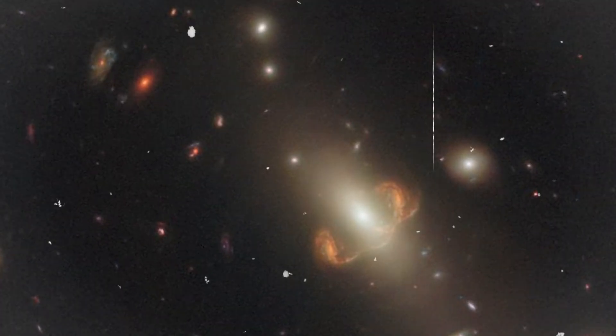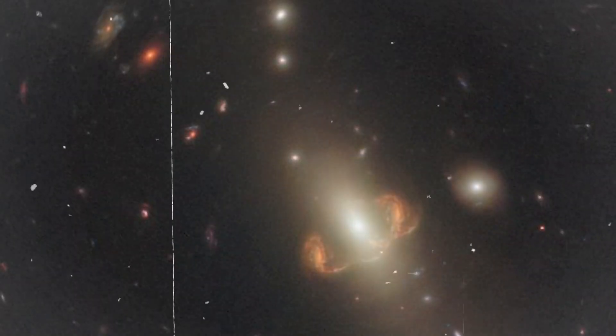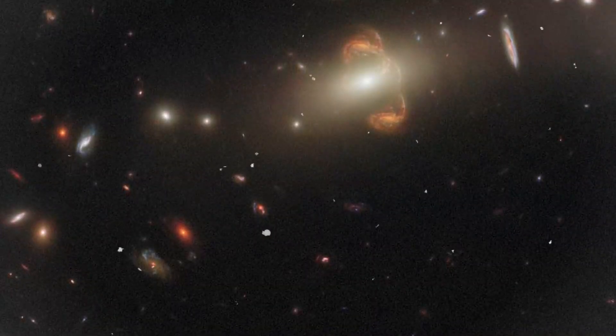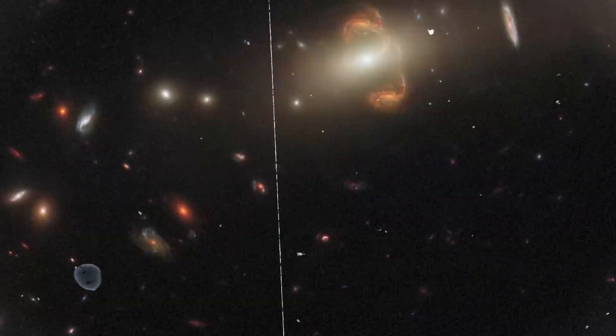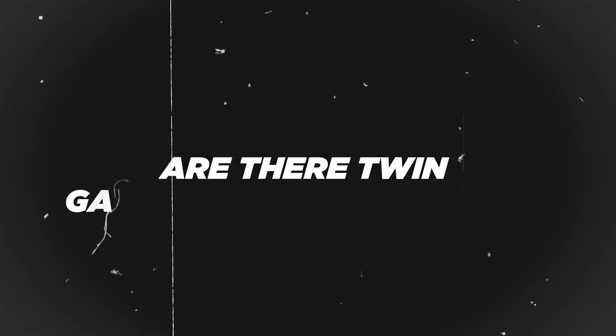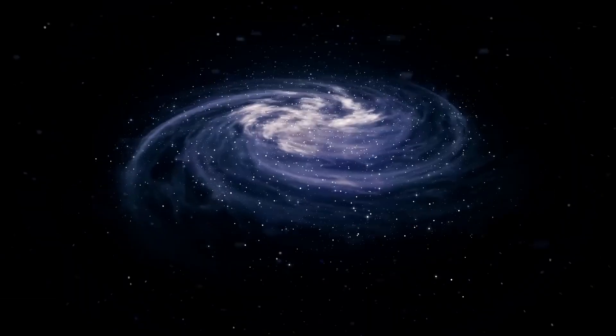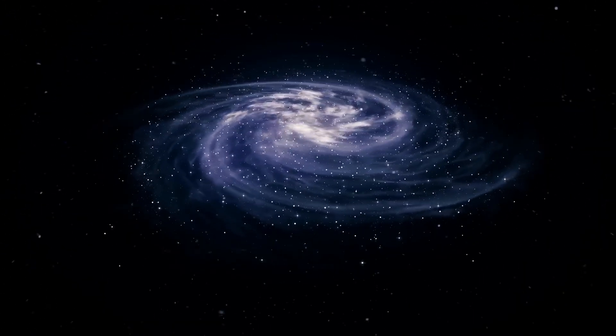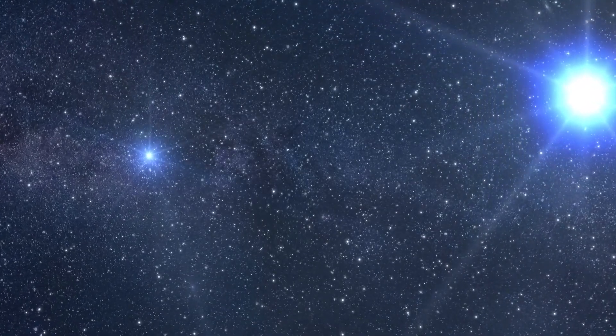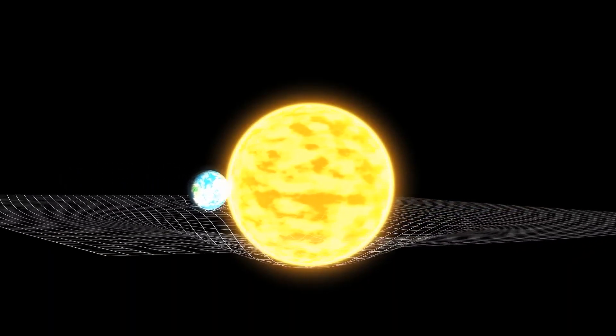The image was shared by the space agency, and it has been explained that it is the galaxy SGAS J143845 plus 145407. In itself, the celestial body looks no different from others of its kind. However, the curious thing about the photo is that, apparently, in front of it, you can see a galaxy exactly the same. Are there twin galaxies in the universe? How is it that the matter of one was replicated and placed right in front of the other? Let's take a very close look at the information published by NASA.